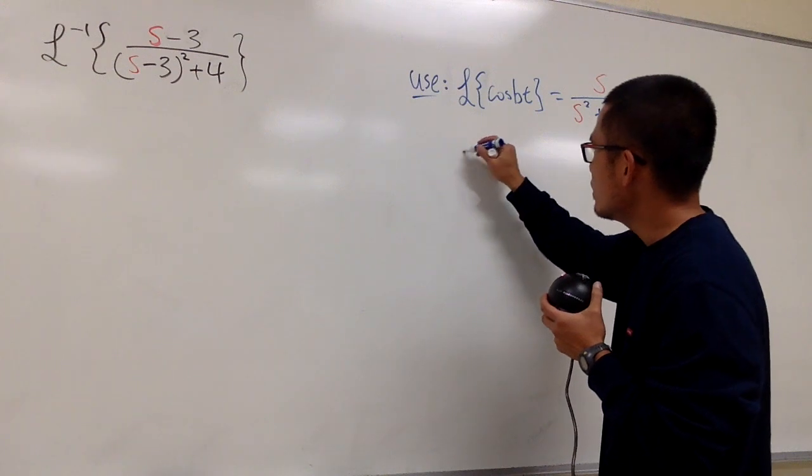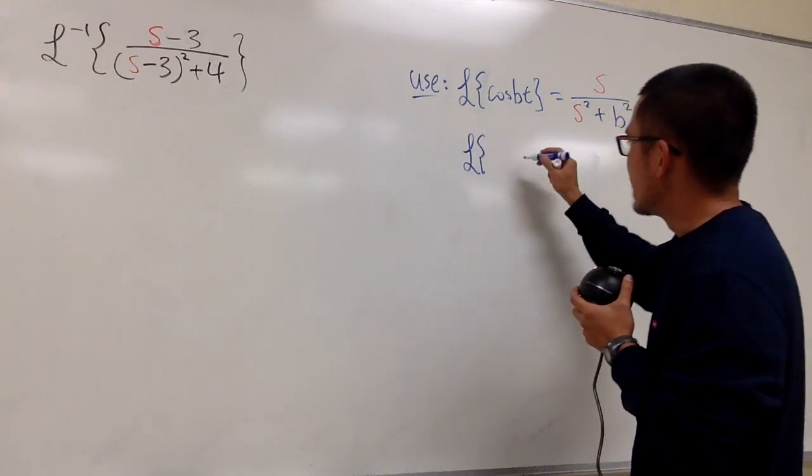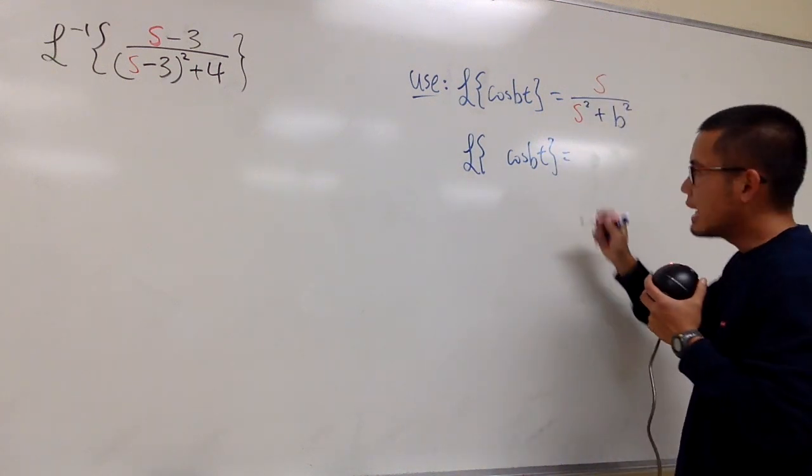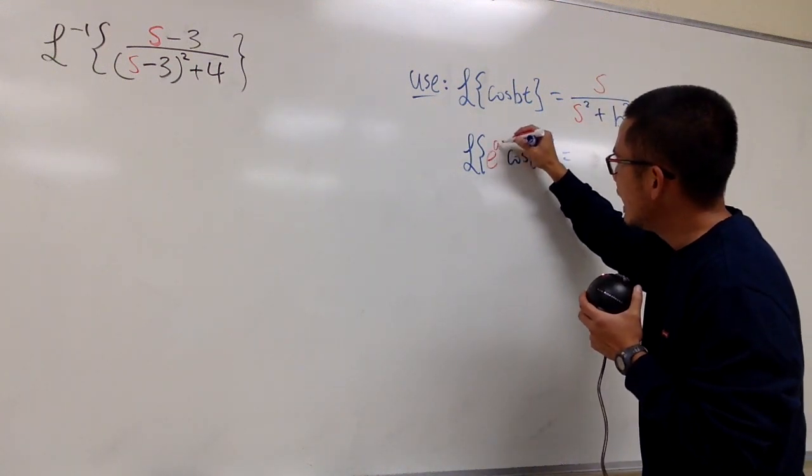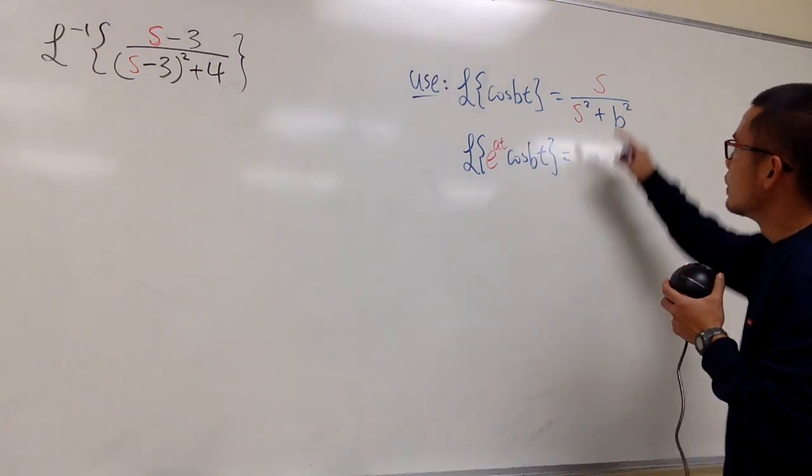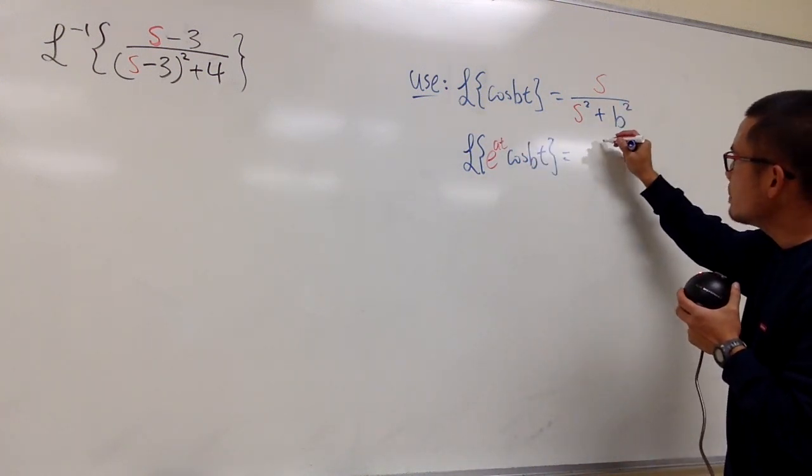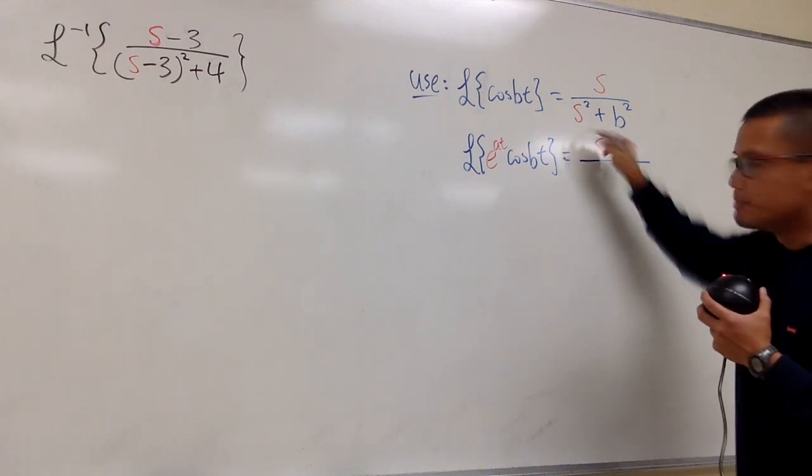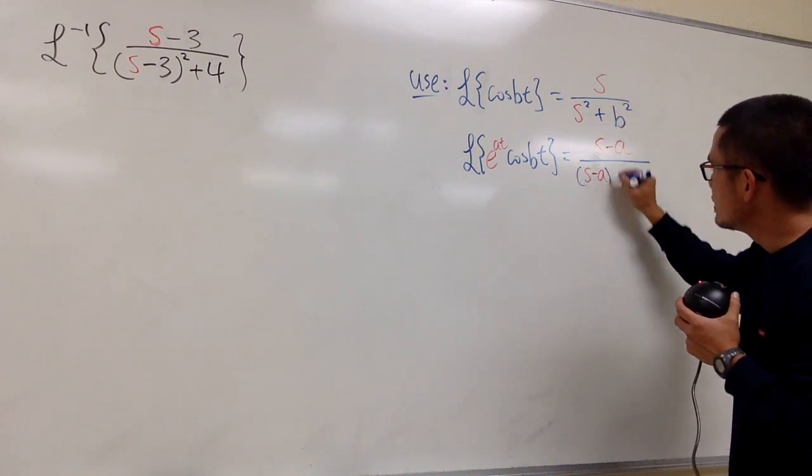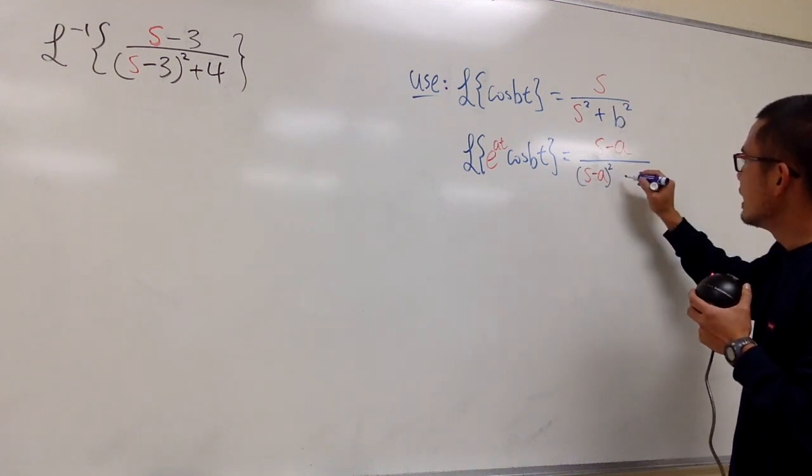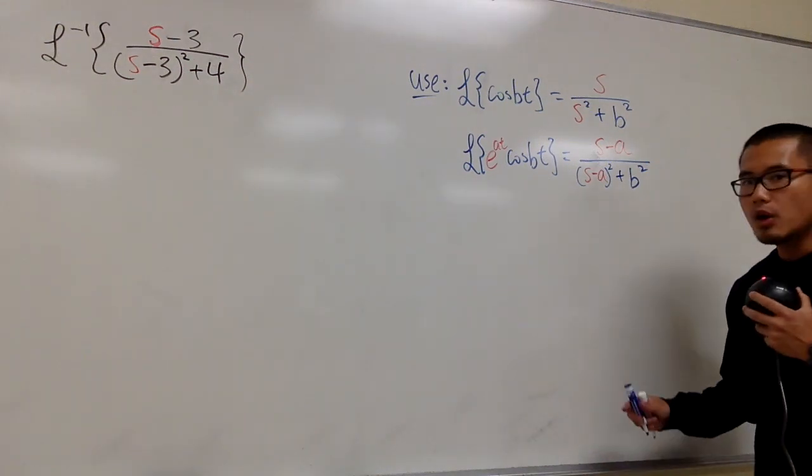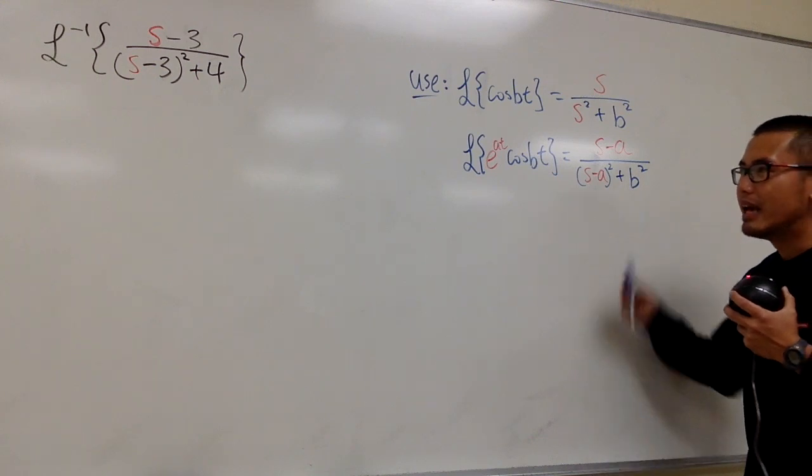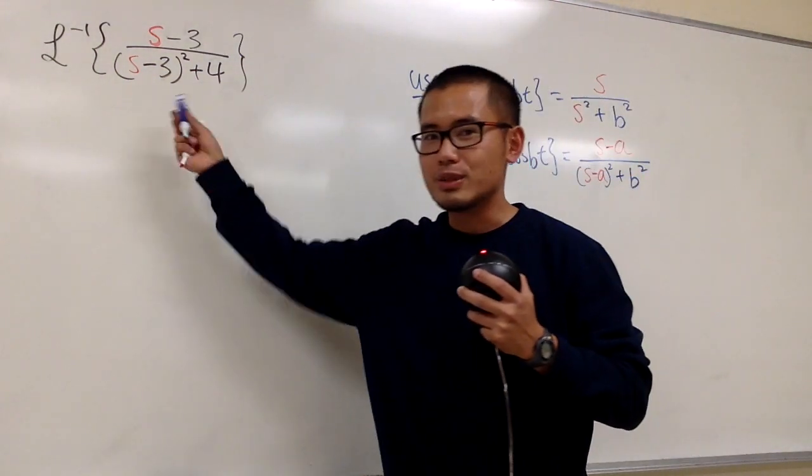Let me write it down right here as well. The Laplace transform of cosine bt will still be this, but if I multiply by e to the at, instead of just s on the top, it will be s minus a, and this s will also be s minus a. Then we put this in parentheses and square that, then plus b squared. As you can see, this is one of the entries on the Laplace table, and this matches exactly with that.